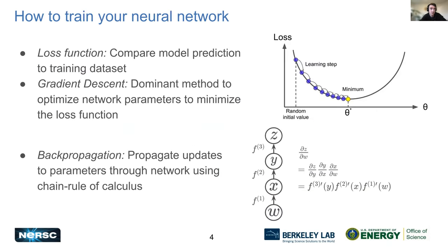To train a neural network, you need a loss function — something you define that compares your model prediction to your training dataset. You want to minimize this loss function by optimizing your model parameters, and that's done with gradient descent. You feed in input samples, make predictions, compute your loss, take the gradient of your loss with respect to your model parameters, and try to take a step in the direction that will reduce the loss. The gradients are passed back through the network via backpropagation, using the chain rule to propagate gradients back to the network parameters.